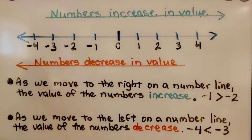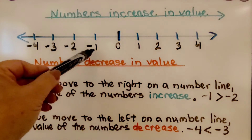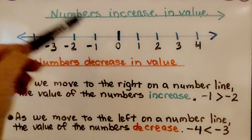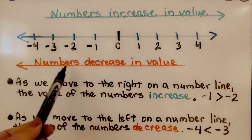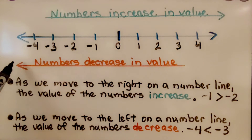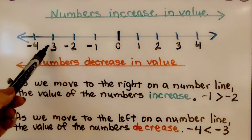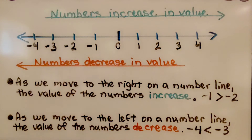As we move to the right on a number line, the value of the numbers increase. Negative 1 is greater than negative 2 — it's further to the right. As we move to the left on a number line, the value of the numbers decrease. So negative 4 is less than negative 3; it's farther to the left.